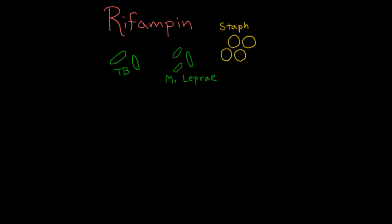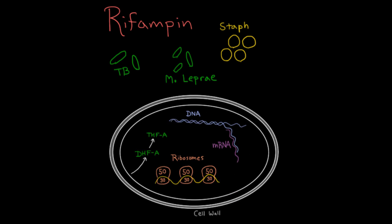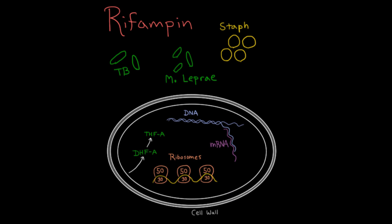So let's talk about how it works. Here's a bacterial cell. We know that most antibiotics work by messing with some of the processes here. They can either mess with DNA synthesis, mRNA synthesis, protein translation, folate metabolism, or potentially the cell wall. So which of these things does rifampin target? It inhibits RNA polymerase. So in the presence of rifampin, this bacterial cell can't make mRNA, and thus can't make proteins.